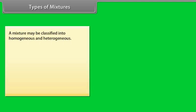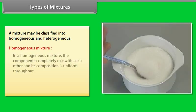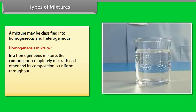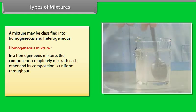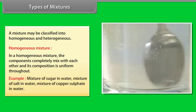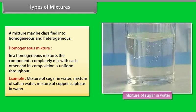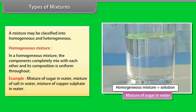A mixture may be classified into Homogeneous and Heterogeneous. In a homogeneous mixture, the components completely mix with each other and its composition is uniform throughout. For example, mixture of sugar in water, mixture of salt in water, mixture of copper sulfate in water.